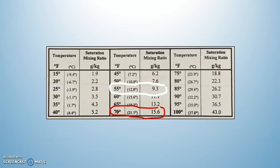What would the relative humidity be? We take 9.3 divided by 15.6, which equals 0.596, times 100 equals 59.6%.